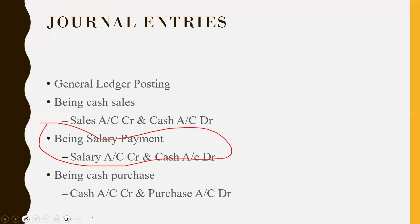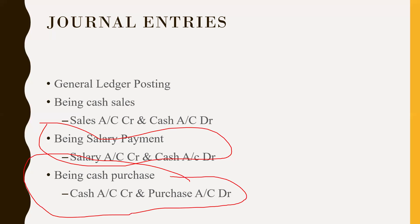Being cash purchase: cash account credit, purchase account debit. A link has been provided in the description — check the link for journal entries. Everything I have given in the journal entries.